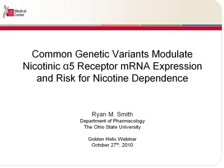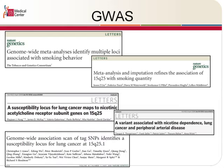The reason why we're interested in the Alpha-5 subunit in particular is because ever since about 2007, and really even continuing today, the region harboring the Nicotinic Alpha-5 Receptor has been implicated in Genome-wide Association Studies or GWAS, and it's been identified for multiple disease phenotypes including smoking behavior, lung cancer, peripheral arterial disease, COPD, etc.